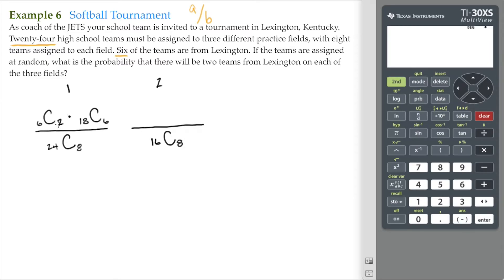We already assigned two of the teams from Lexington. We now have four choose two. And we already assigned six of the teams of the other softball teams. So, that leaves us with 12 choose six. So, here's the chance of the remaining Lexington teams to be assigned to the second field.